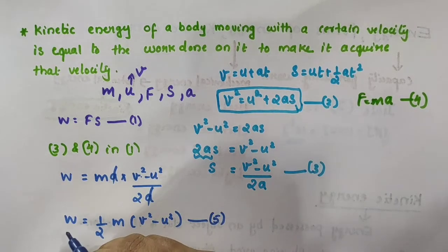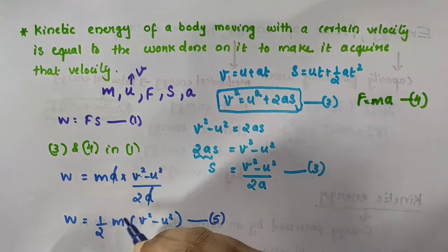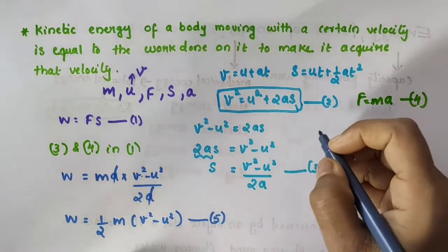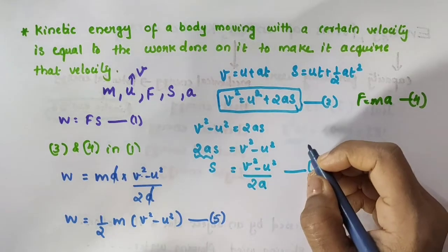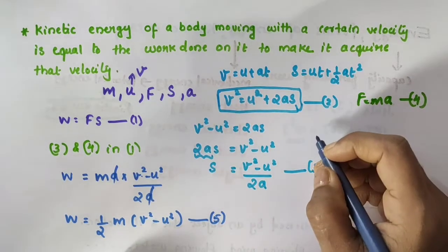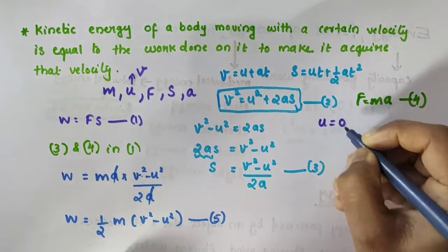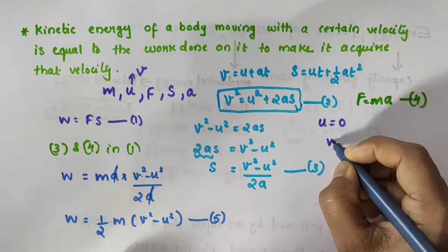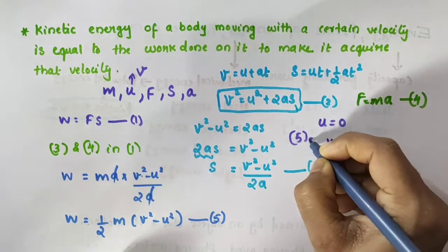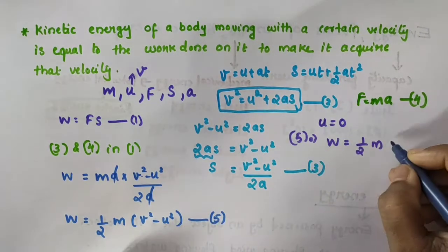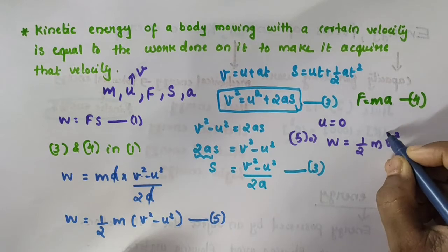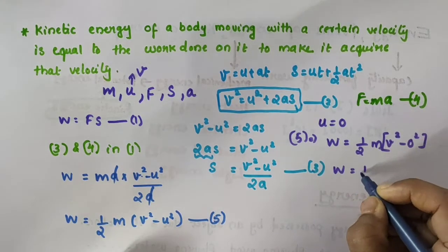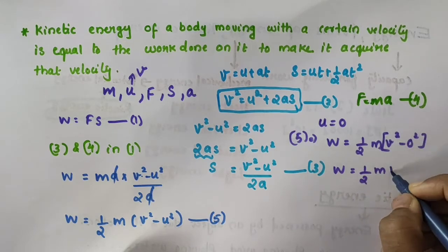This work done is actually equal to the change in kinetic energy of an object. If the object is starting from a stationary position, then initial velocity U equals 0. So equation number 5 becomes W = ½M(V² − 0²) = ½MV².